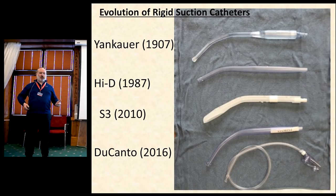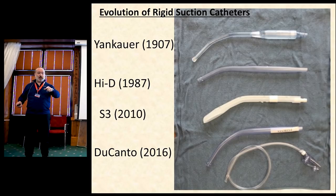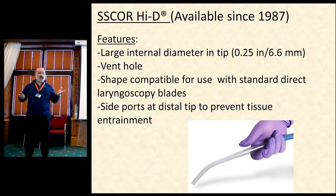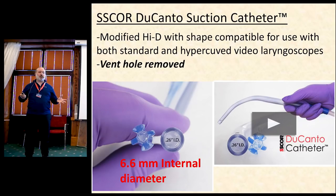Let's look at the evolution of the rigid suction catheter from 1907 down to 2016. We have the Yankauer, the Hi-D which is a product by SSCOR — the company that makes the DuCanto suction catheter — the S3 which I've brought along and looks like a big frozen yogurt spoon intended to help you debride the pharynx of solid matter, and then the DuCanto, which is essentially a hyper-curved version of the Hi-D but with the vent hole removed. The Hi-D has been available since 1987, starting in Los Angeles. The Los Angeles County Fire Department uses their products quite often. The recent innovation of taking that catheter and making it into that shape allows it to work with GlideScopes, D-blades, King Visions, and AirTraqs — compatible with hyper-curved video laryngoscopes and direct laryngoscopy. We've removed the vent hole to reduce the potential for error during use.